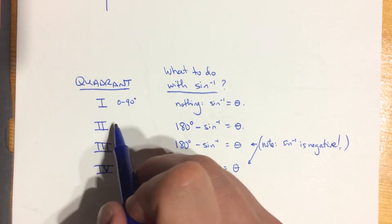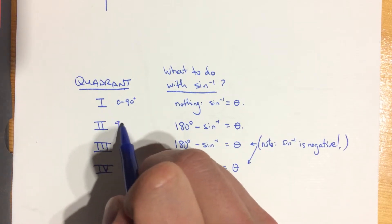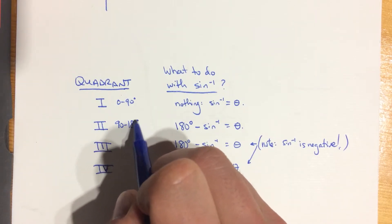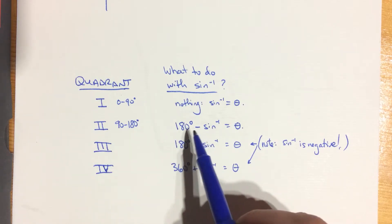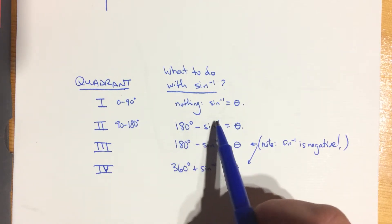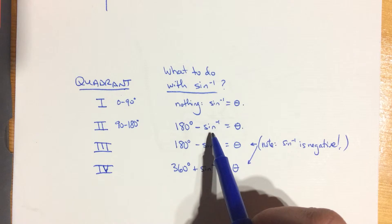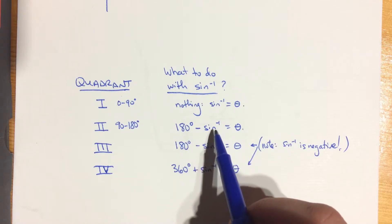If you're in the second quadrant, that is you're sort of more than 90 up to 180, less than 180, then you take 180 and you take away or subtract the value that your calculator gives you from the sine inverse function. And that will give you the angle that you're looking for.